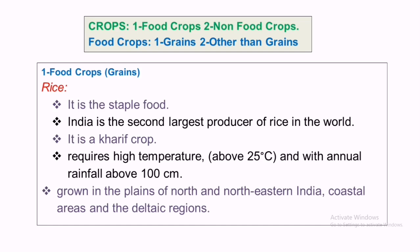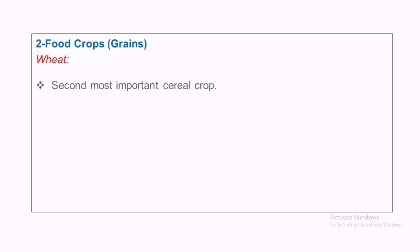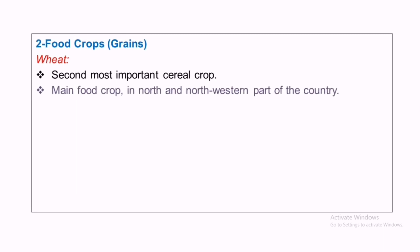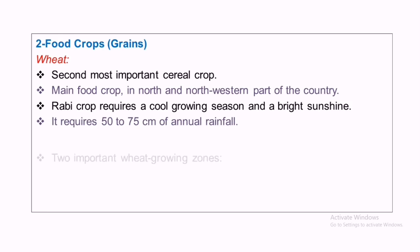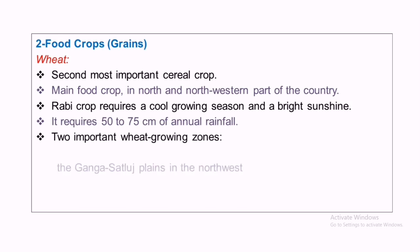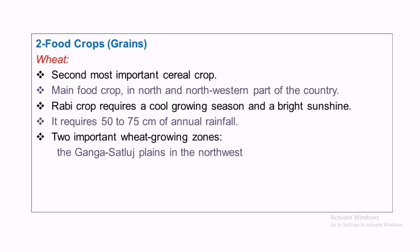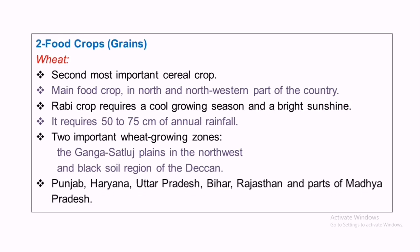Rice is grown in the plains of north and northeastern India and in coastal and deltaic regions. Wheat is the second most important cereal crop and the main food crop in the north and northwestern part of the country. It is a Rabi crop requiring cool growing seasons and bright sunshine, and 50 to 75 centimeters of annual rainfall. The two important wheat-growing zones are the Ganga-Sutlej plains in the northwest and the black soil regions of the Deccan. Punjab, Haryana, Uttar Pradesh, and Bihar are major wheat-producing states.